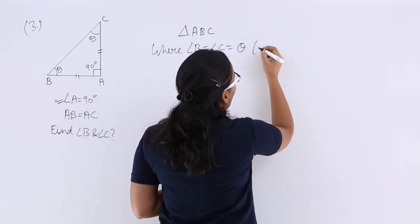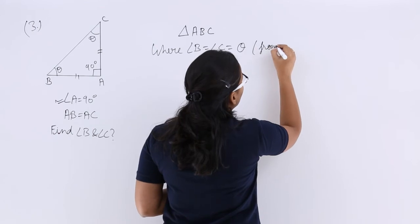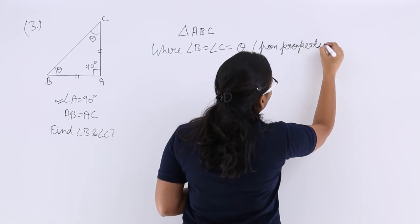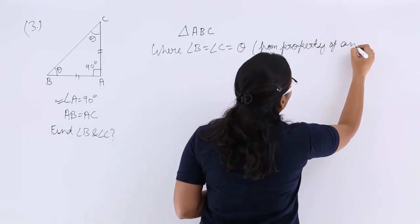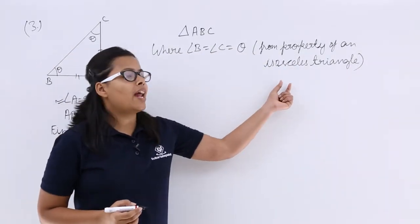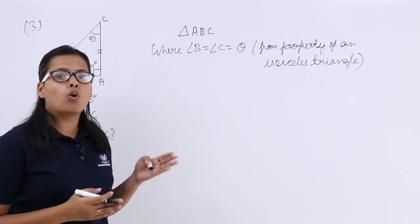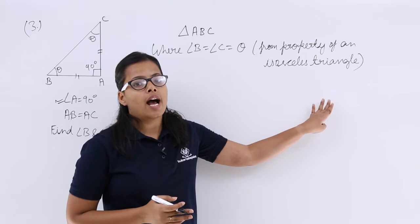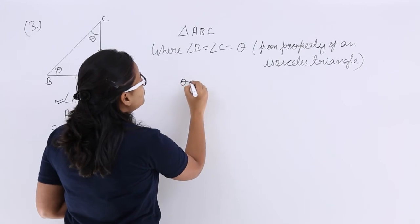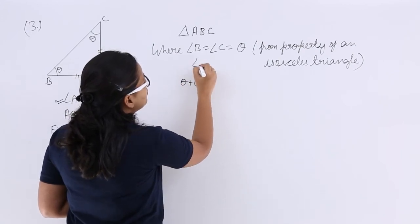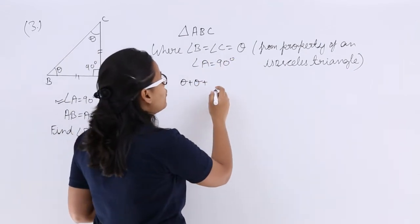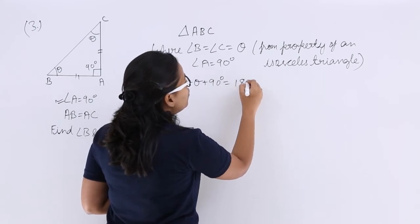How do we know this? From the property of isosceles triangles. If you do not remember, go back and review the property for an isosceles triangle. Now, we know that angle A is 90 degrees, and the sum of angles of a triangle is equal to 180 degrees.